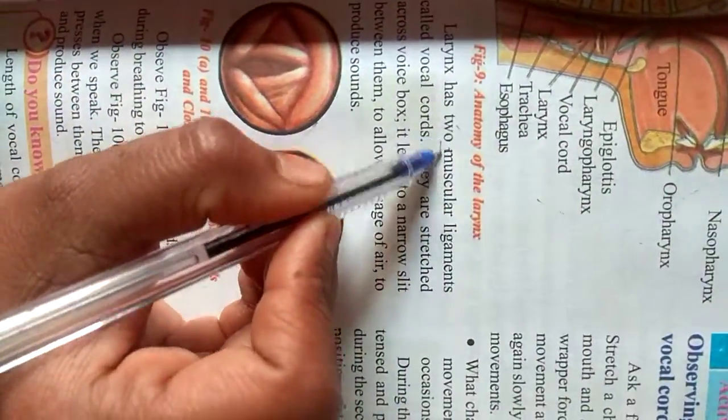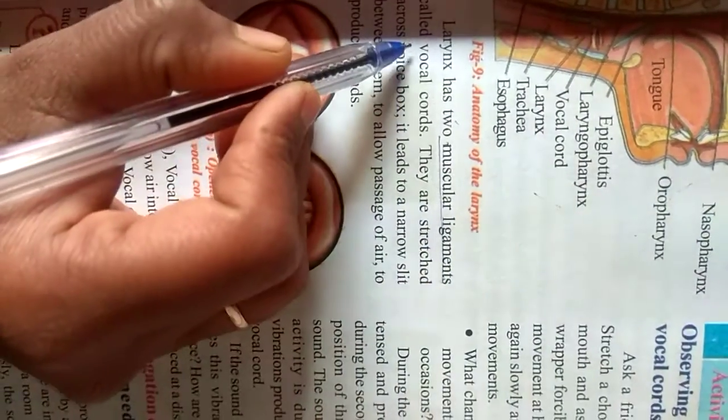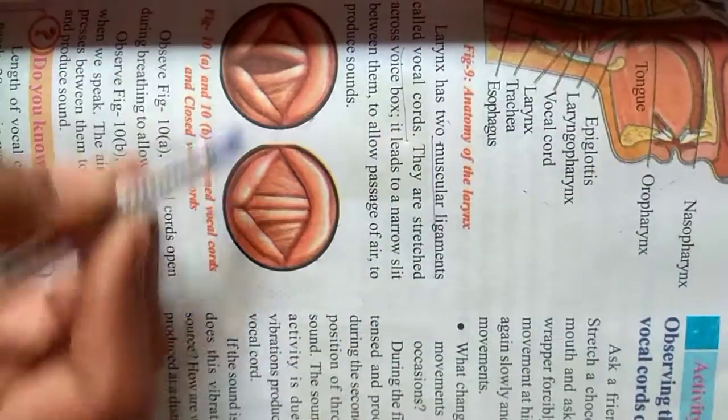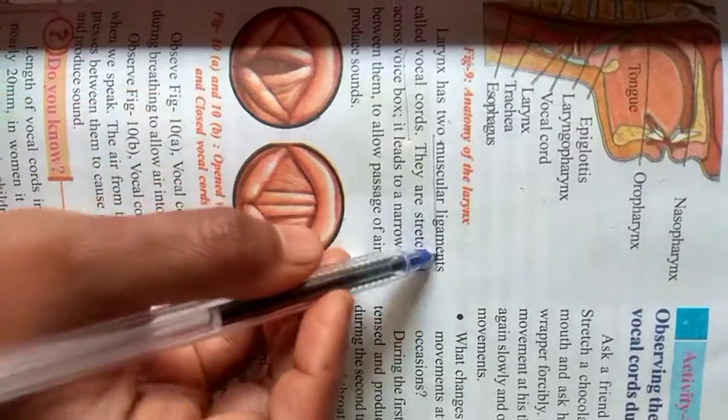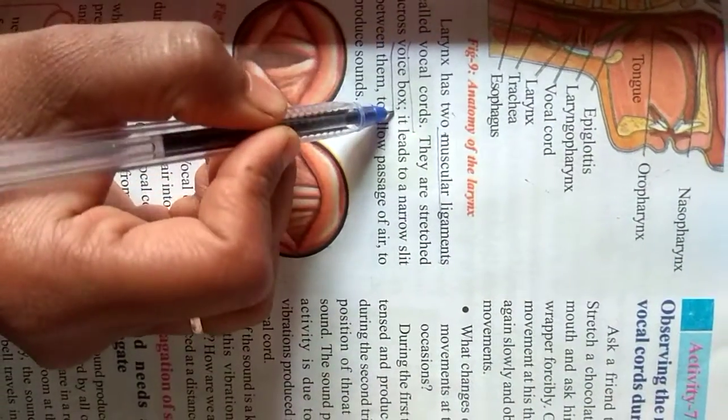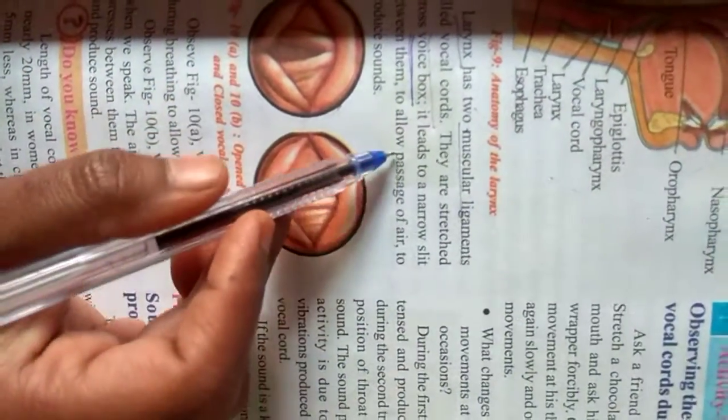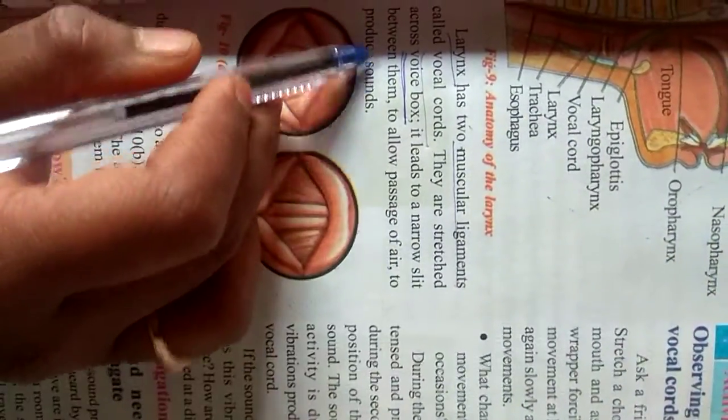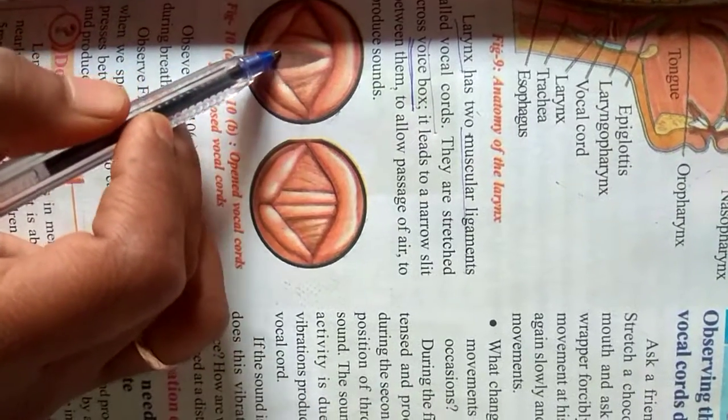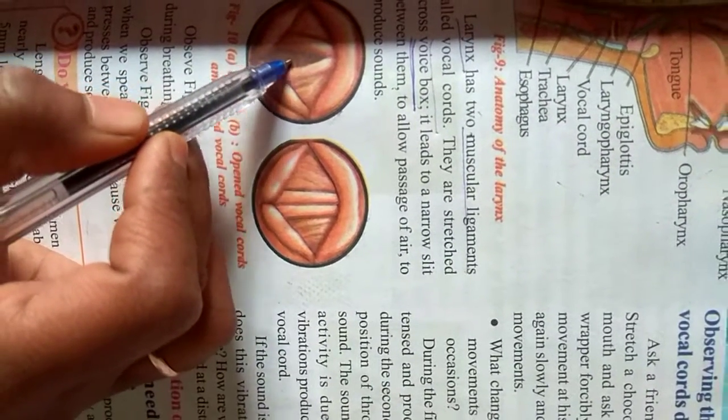The larynx has two muscular ligaments called vocal cords. These are vocal cords. They are stretched across the voice box. Voice box is nothing but the larynx. And this leads to a narrow slit between them. Slit means opening or hole.